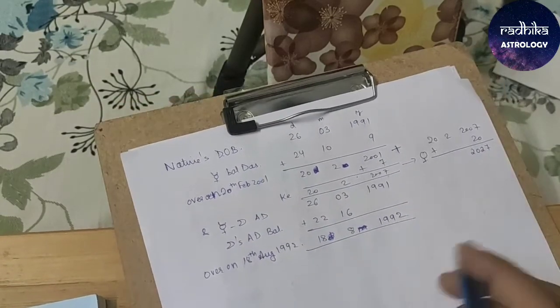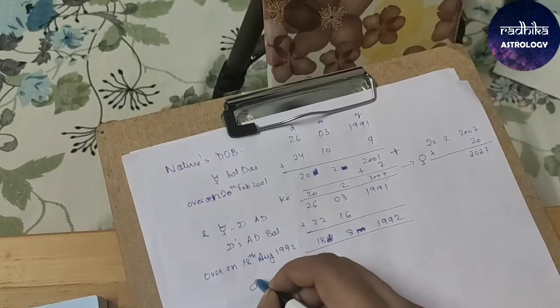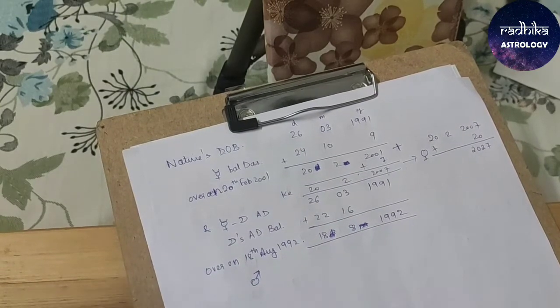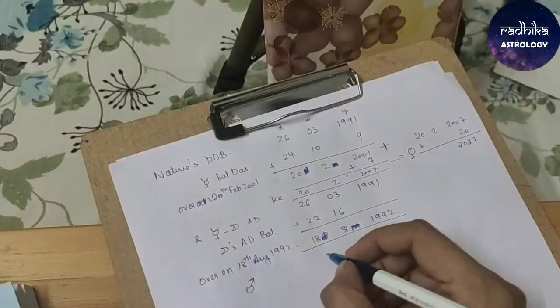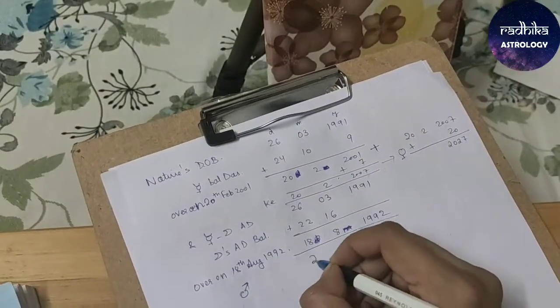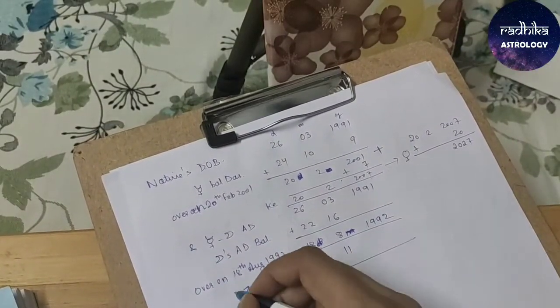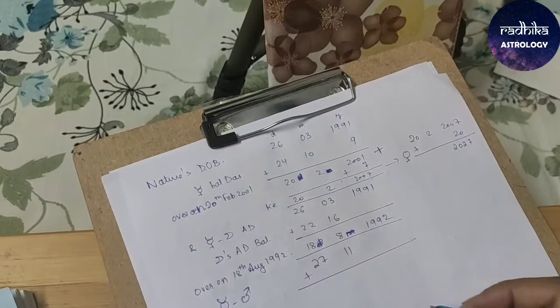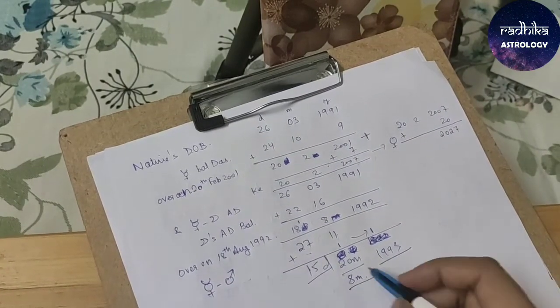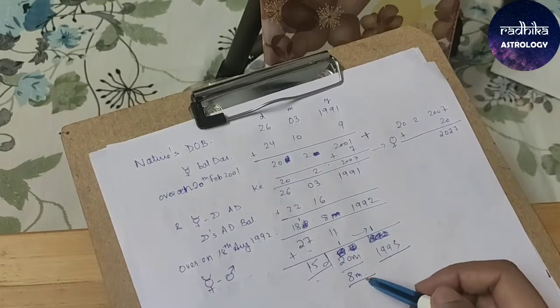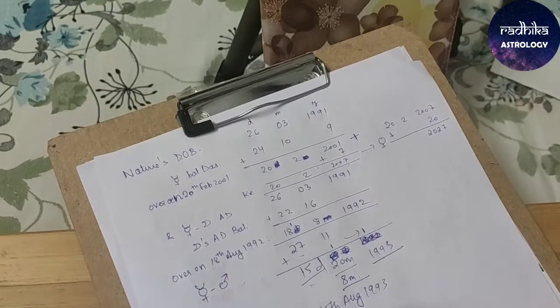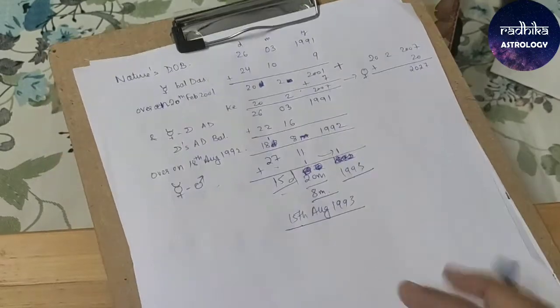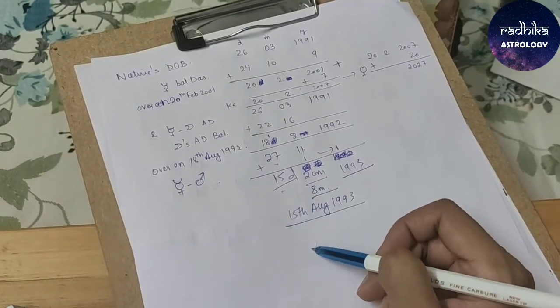After Moon which Antardasha you will get? Mars. Mars Antardasha. Mercury has given Mars 11 months 27 days. Add it. This is the Mars Antardasha in Mercury. Mercury Mars will be over on 15th August 1993. Mercury Mars will be over. Keep on adding the Antardasha lords like that.